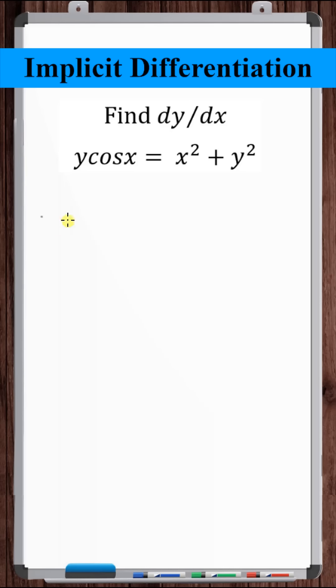Let's use implicit differentiation to find dy/dx. So let's take the derivative with respect to x of both sides.